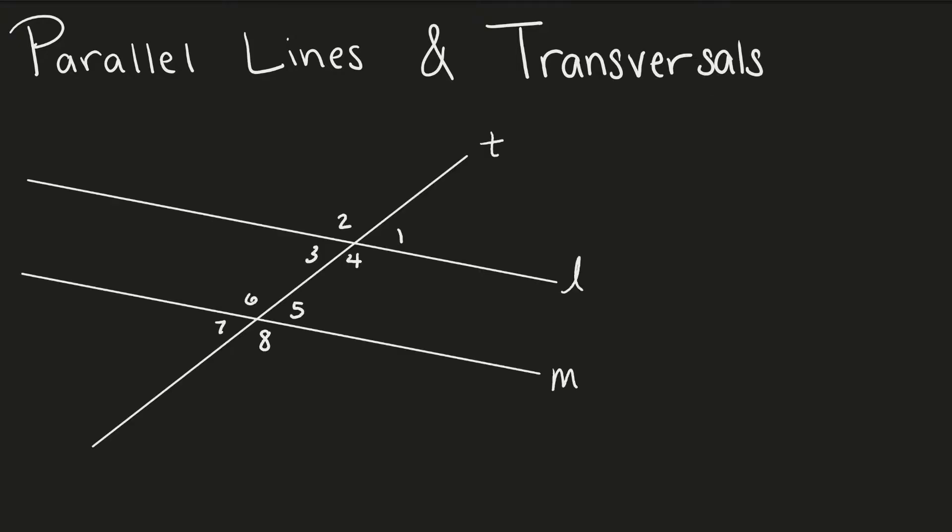Two parallel lines and a transversal looks like this. The two lines, L and M, will never touch — they are parallel to each other. The transversal intersects both lines. There are relationships between the angles on these lines, and using these relationships we can identify which angles are congruent to each other and find the value of an angle using the relationship.